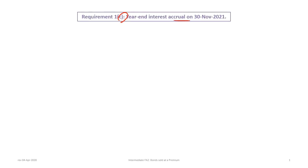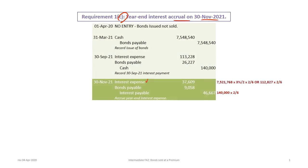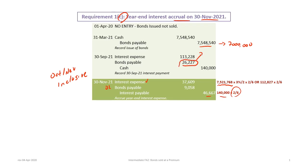For entry C, the year-end interest accrual on November 30th: the interest payable credit is $140,000 times 2/6 (October and November) = $46,667. The bond payable balance is now $7,521,768 ($7,548,540 minus $26,227). Interest expense is $7,521,768 times 1.5% times 2/6 = $37,609. The debit to bond payable to balance the entry is $9,058.